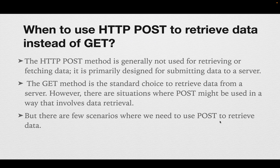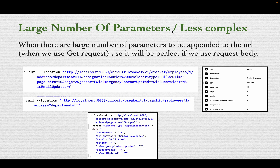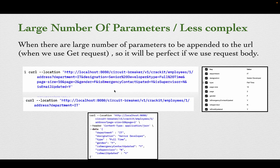The first situation is a large number of parameters. When there are a large number of parameters I need to send as part of the request, I would append them to my URL if using GET. For example: department, designation, type, page size, page, gender, is-emergency-contact-updated, supervisor, is-email-updated — so many parameters make the URL look clumsy and complex.